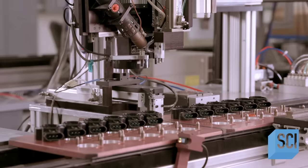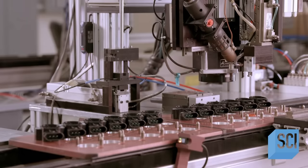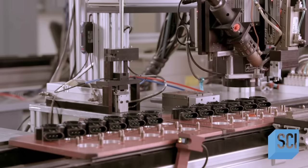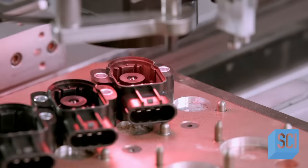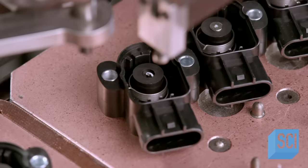After glue has been injected in the holders, a robot moves in. It scans the holders and confirms that there's glue in each cavity. It then inserts magnets in the holders.